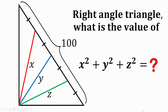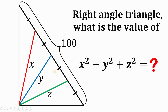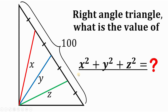Can you solve this geometry challenge? Here's the question. Given this right triangle with a hypotenuse of 100 units, there is a red segment with length x, a blue segment with length y, and a green segment with length z. The question is: what is the numerical value of x squared plus y squared plus z squared?